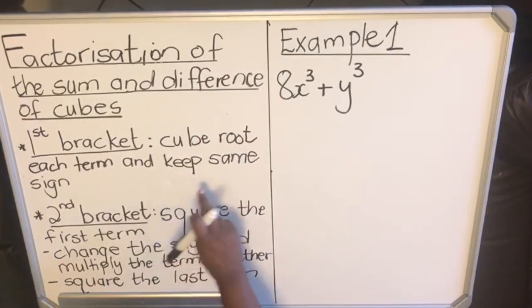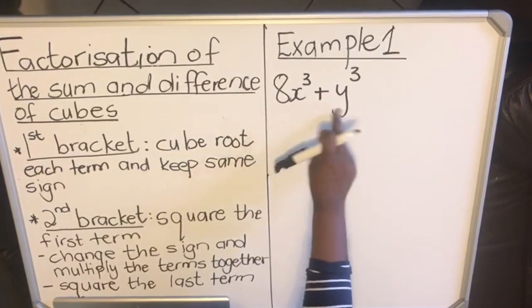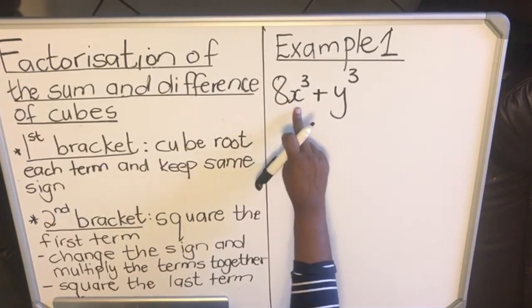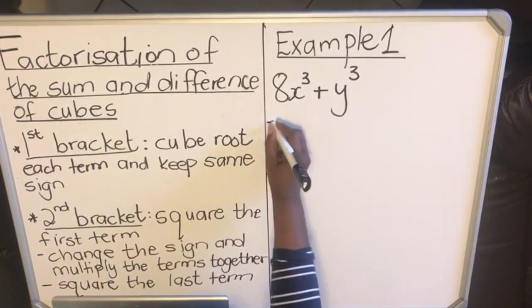Let's look at the example. Our cube is 8x³ + y³. That's also important - that you check whether you have cubes. 8 is a cube, x³ is a cube, y³ is a cube.